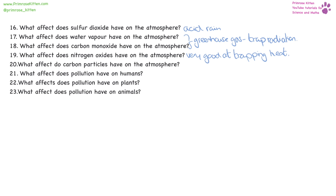When we say nitrogen oxides are very good at trapping heat, that is a bad thing — we don't want them to be good at trapping heat. What effect do carbon particles have on the atmosphere? That effect is going to be global dimming. Carbon particles are like soot — it's like putting a big veil over the earth so we can't see the sun.